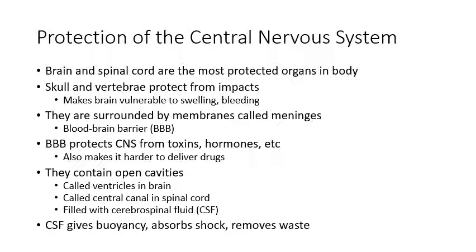The central nervous system is encased entirely by bone. The brain is encased in the skull, and the spinal cord runs through the vertebral column, surrounded by the bone of the vertebrae and by the tough cartilage in those intervertebral discs. The bony protection helps protect the central nervous system from impacts, but the drawback is that it makes it vulnerable to swelling, because if that tissue starts to swell up, there's nowhere for it to go.